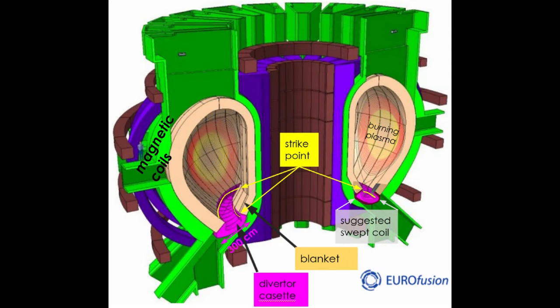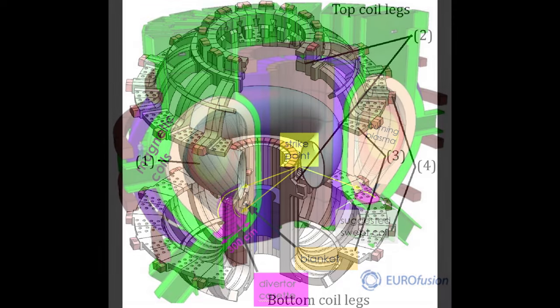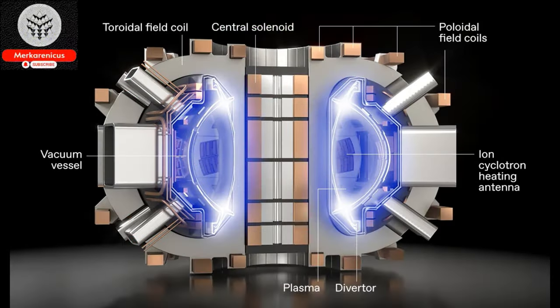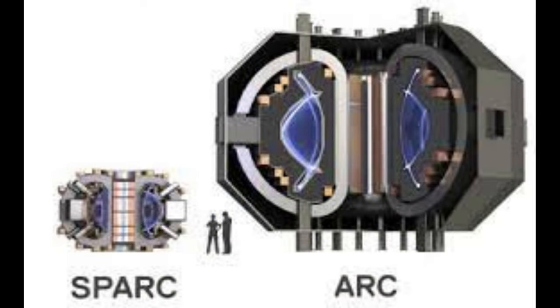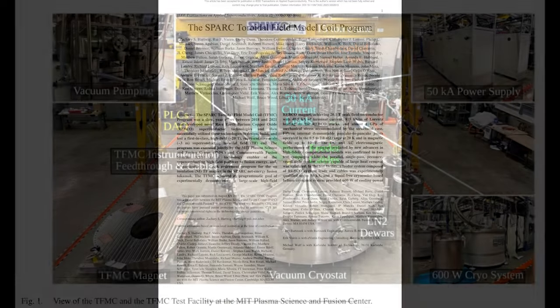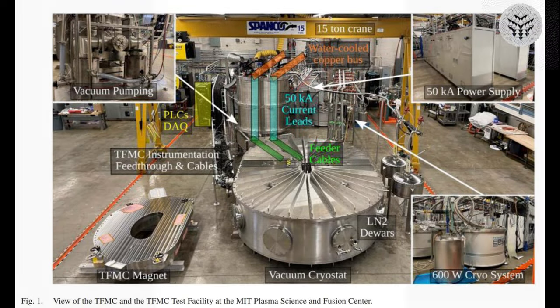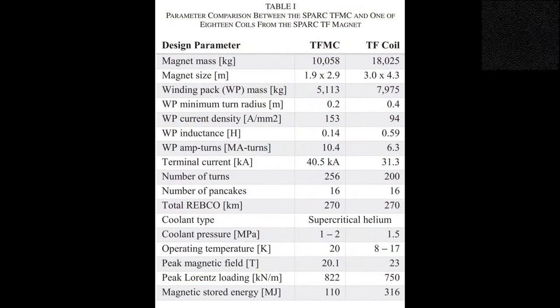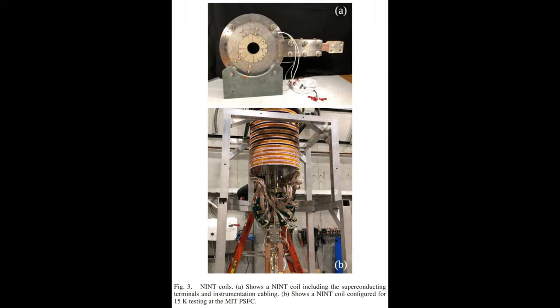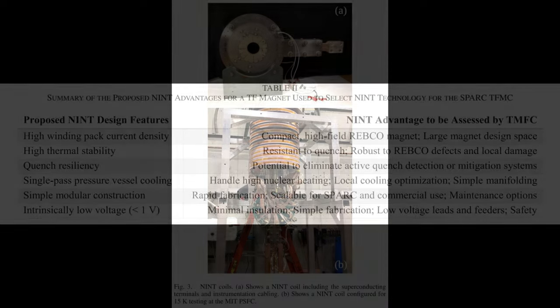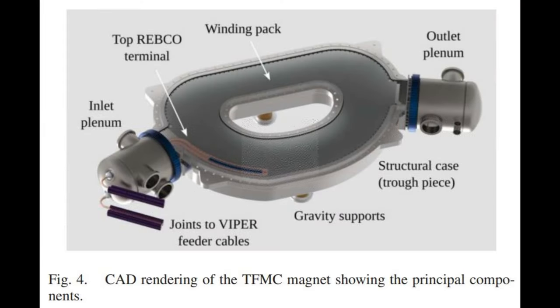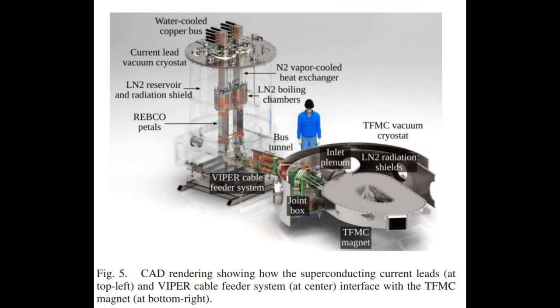According to him, the partnership with CFS played a vital role in the success of the project. By combining the strengths of an academic institution like MIT and a private company like CFS, they were able to accomplish tasks that would have been impossible for either entity alone. One significant contribution from CFS was their ability to utilize the resources of a private company to establish and expand a supply chain on an unprecedented scale and timeframe. This was especially crucial for obtaining 300 kilometers of high-temperature superconductor, which was procured with meticulous quality control within a year and seamlessly integrated into the magnet according to the planned schedule. The success of the project hinged on the collaboration between the MIT and CFS teams. We viewed ourselves as a unified team, which enabled us to accomplish what we did.